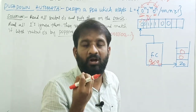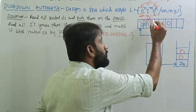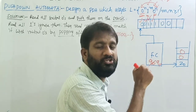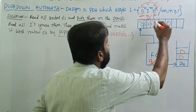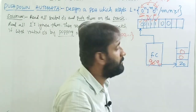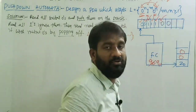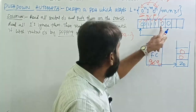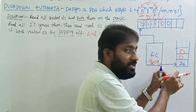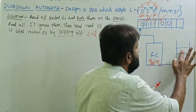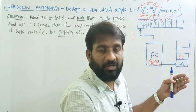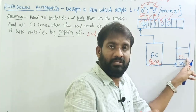Don't do any push or pop operation — simply ignore all ones. Read one, ignore. On state q1, we ensure all ones are read. Then read 0: now map 0 with 0 by doing the pop operation, remaining on the same state. For the next 0, read it and match with the top of the stack — symbols are same, so do the pop operation.